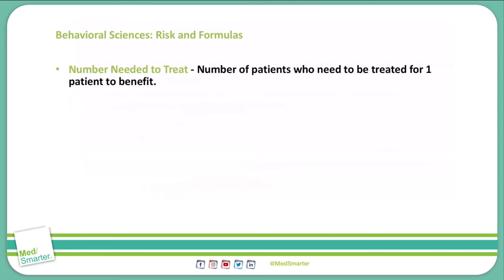Furthermore, the number needed to treat is the number of patients who need to be treated for one patient to benefit. Our calculation uses the absolute risk reduction: 1 over the absolute risk reduction gives us the number needed to treat. A high number needed to treat means the treatment is not very effective — if we have to treat 10 patients before one benefits, then 9 patients are not receiving any benefit from that treatment.